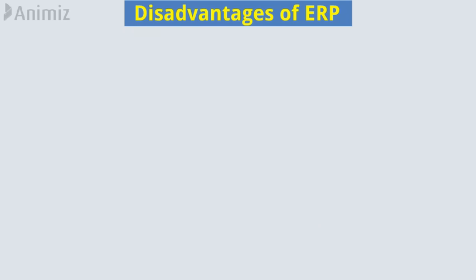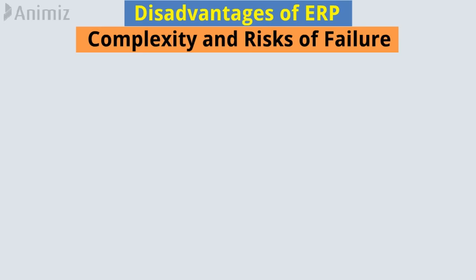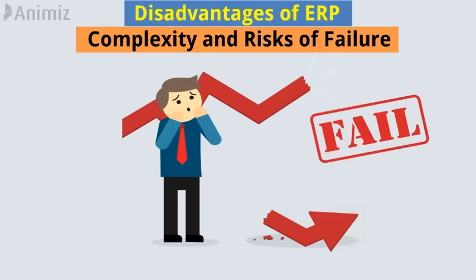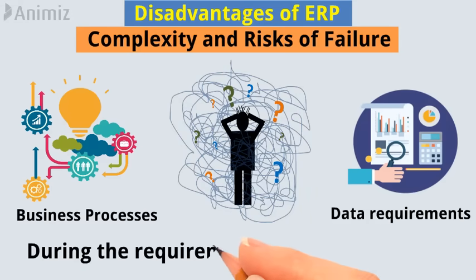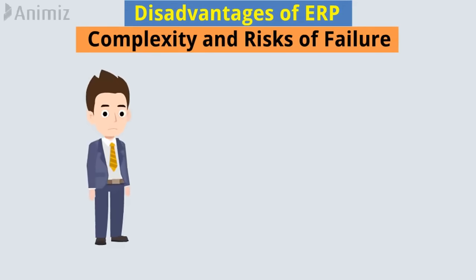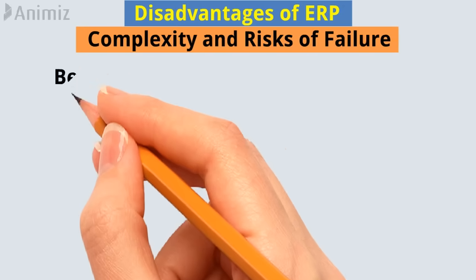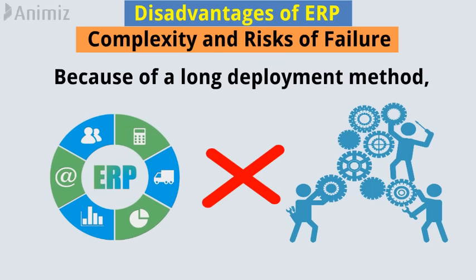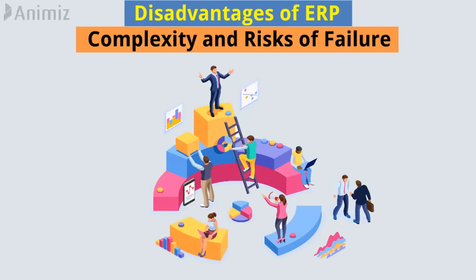Disadvantages of enterprise resource planning. First, complexity and risks of failure. Sometimes ERP projects are not successful because business processes and data requirements are found to be too complex during the requirements-gathering phase, and employees are forced to take part in change management. Because of a long deployment period, the ERP system might not keep pace with modifications that the business needs to make in a dynamic environment of intense competition.